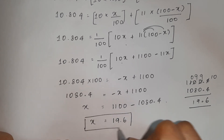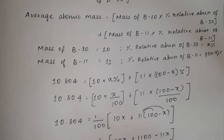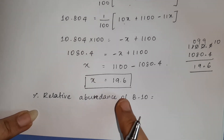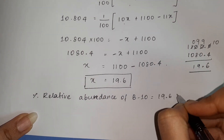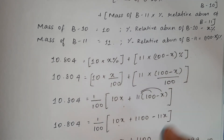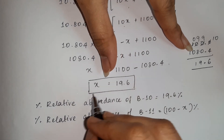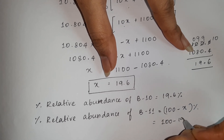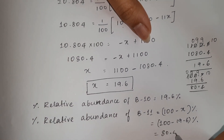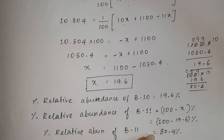So x = 19.6, meaning the percentage relative abundance of Boron-10 is 19.6%. Therefore, the relative abundance of Boron-11 is 100 − 19.6 = 80.4%. The relative abundance of Boron-11 is 80.4%.